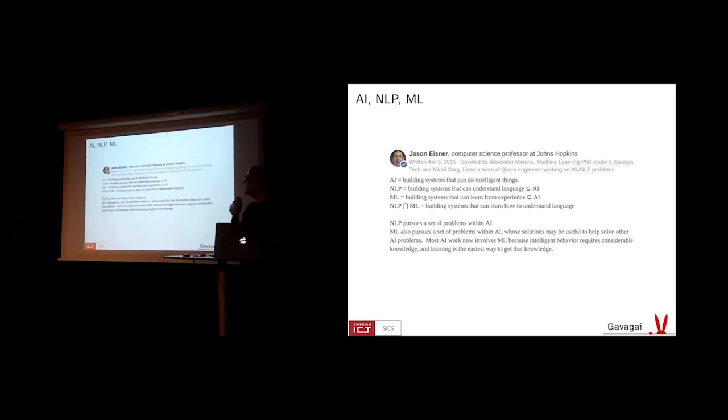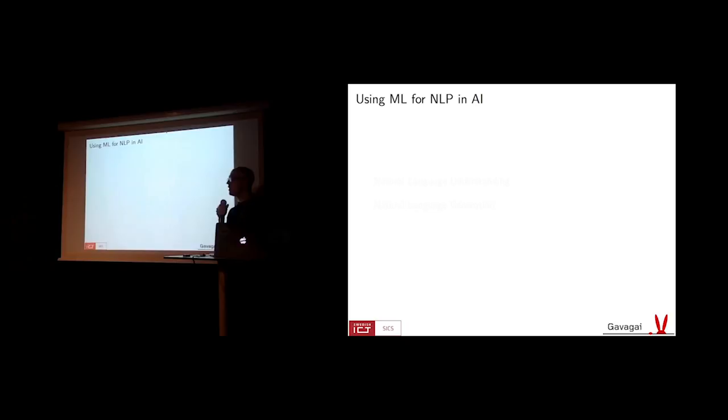So I want to start by this integrity of this terminology here tonight. And I'm going to do that by stealing something from the internet, as you do. So I think this is a very good explanation of these terms from Jason Eisner, a professor in science. He defines AI as building systems that do intelligent things. Natural language processing is building systems that can do things with language. It's a subset of artificial intelligence. And the same is true of machine learning, building systems that can learn from experience. So we have the intersection between natural language processing and machine learning, which is building systems that can learn how to do things with language.